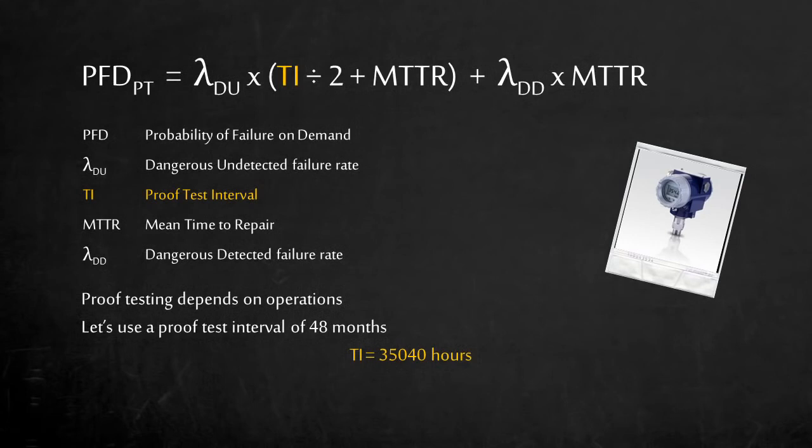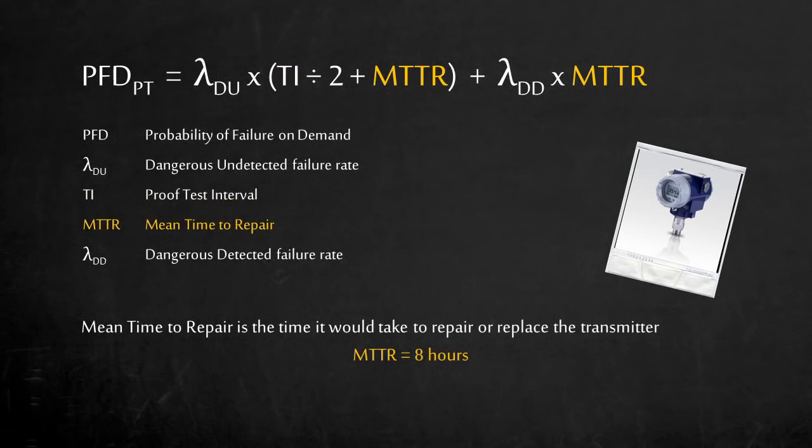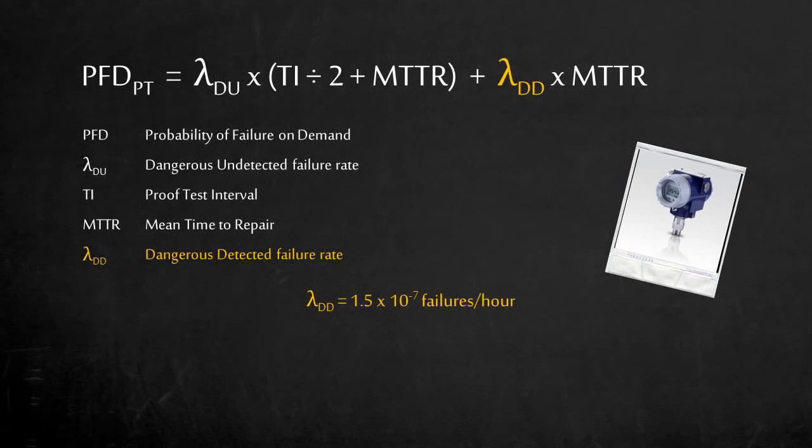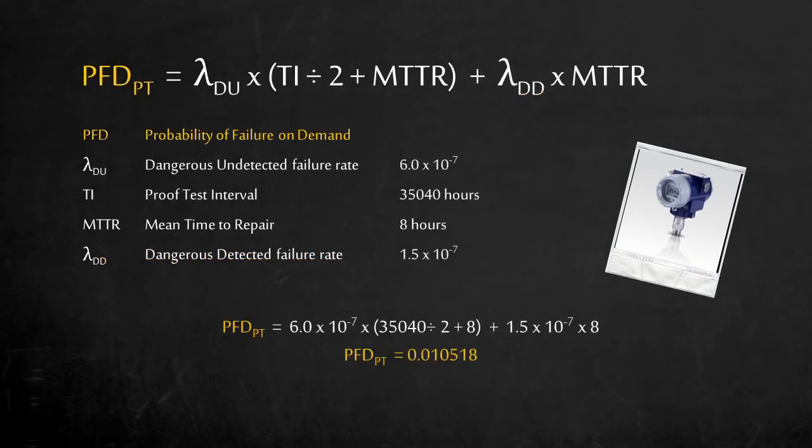Since all the variable units need to be consistent, we'll convert 48 months into 35,040 hours. The mean time to repair also depends on operations and maintenance. Let's say it would take the crew 8 hours to repair or replace the transmitter. The pressure transmitter has a dangerous detected failure rate of 15 failures per 1 million hours of operation. Now that we got all the variables, we can calculate the probability of failure on demand of the pressure transmitter, which is 0.010518, or about 1% chance in any given year.